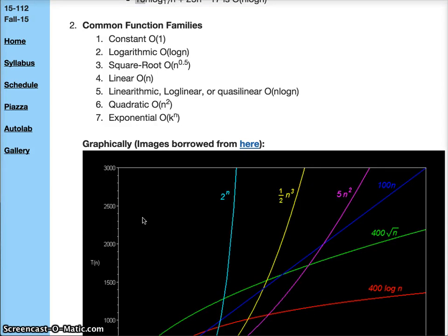Now we're going to look at some function families and see which function families are larger than others. The smallest possible function family is constant, or as we denote it O(1). What this means is that the amount of work we do in our function is not determined by the size of our input.